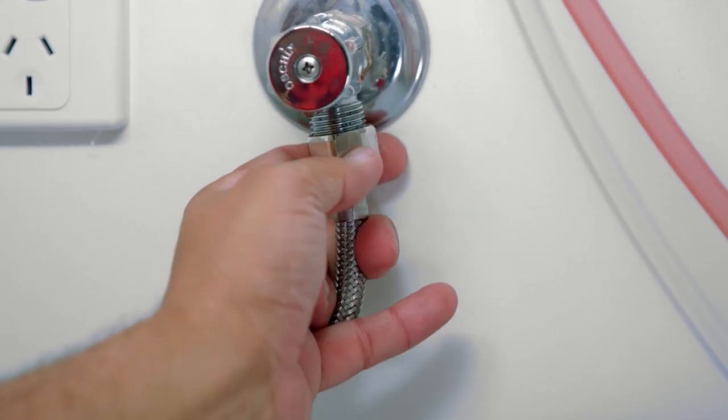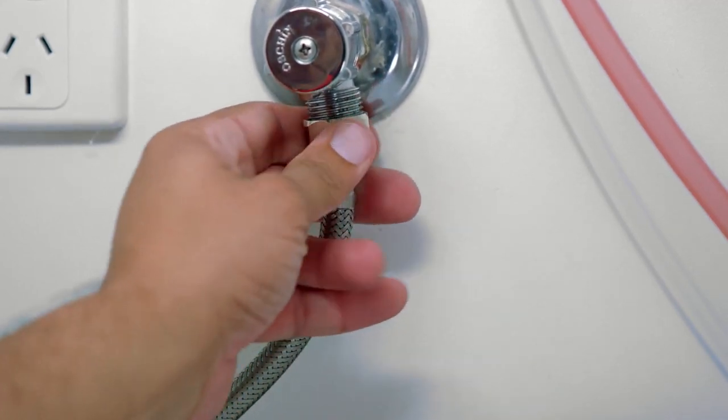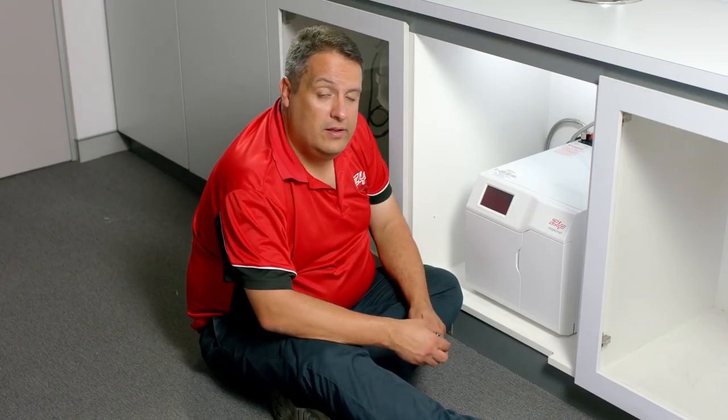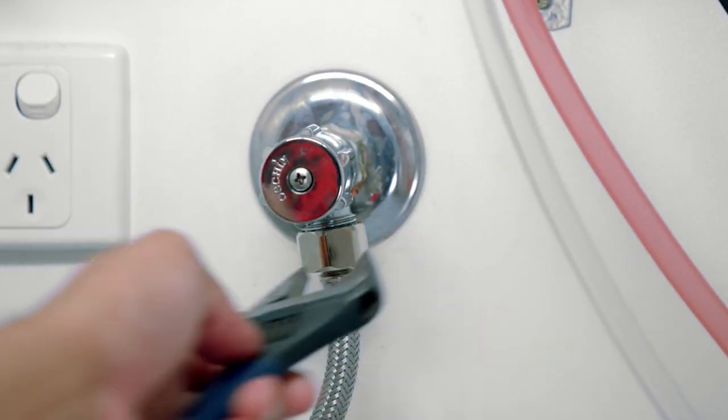I'm going to connect the water supply to the tap. Do the braided hose up finger tight, and for the last quarter or half a turn, use a shifting spanner to make sure it's nice and tight.